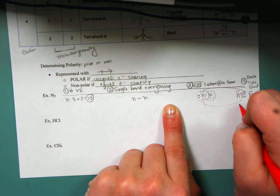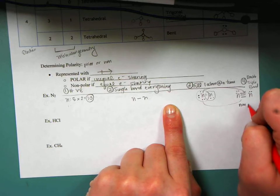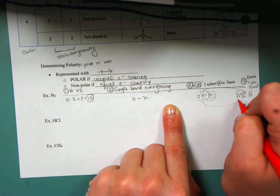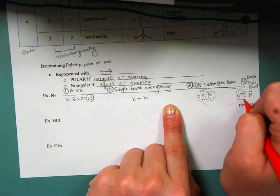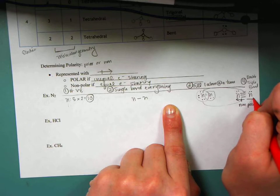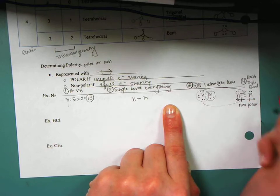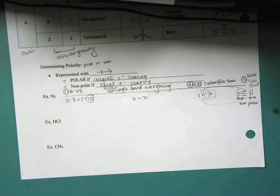This is a nonpolar molecule. So this nitrogen is going to draw electrons out. This nitrogen is going to draw electrons out, and those poles balance each other. So they're pulling in opposite directions, but it's an equal, opposite direction.